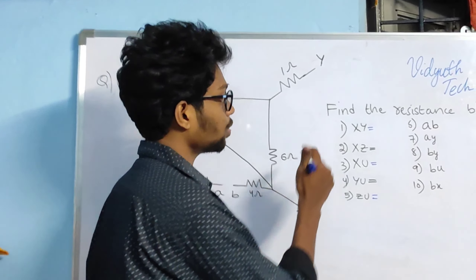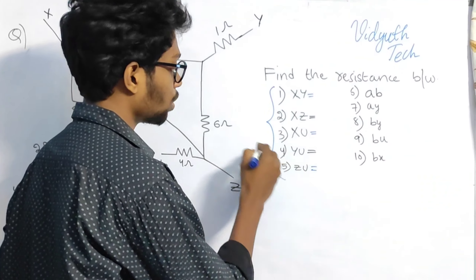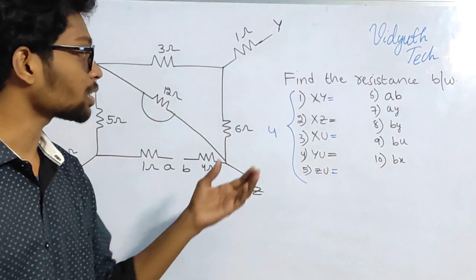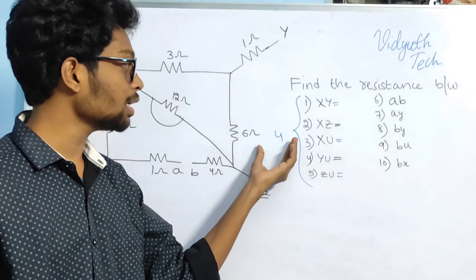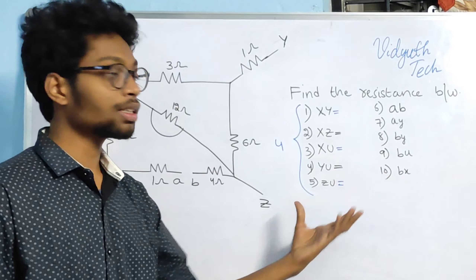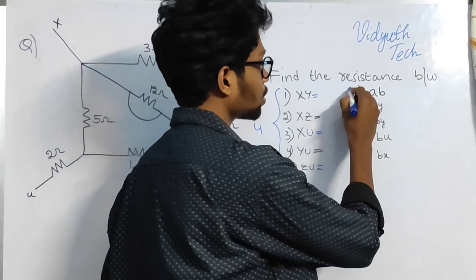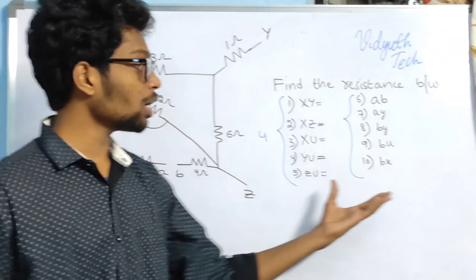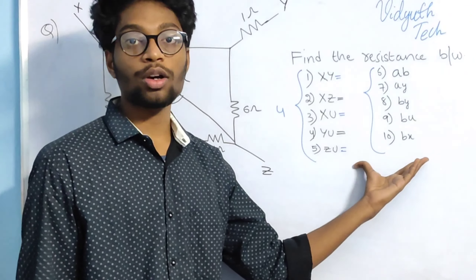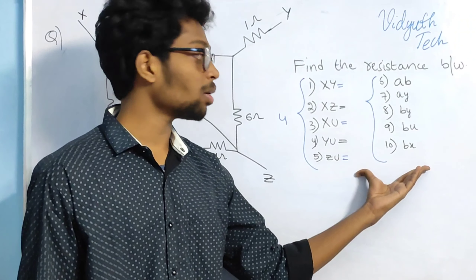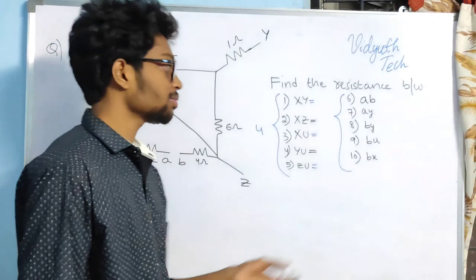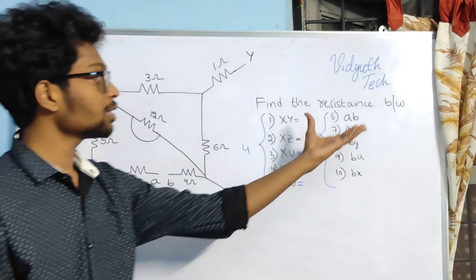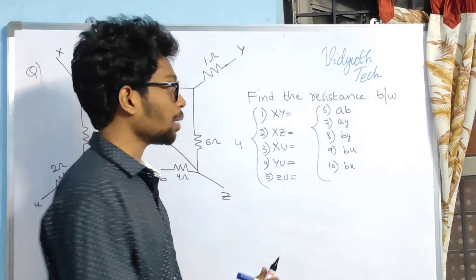In the previous video, that is lecture number 4 of important questions and expected questions of SSC JE Electrical, I solved these 5 problems. In this video, I would like to solve another 5 problems. I want you to do these problems. Coming to this problem, we have to find equivalent resistance between A and B terminals.